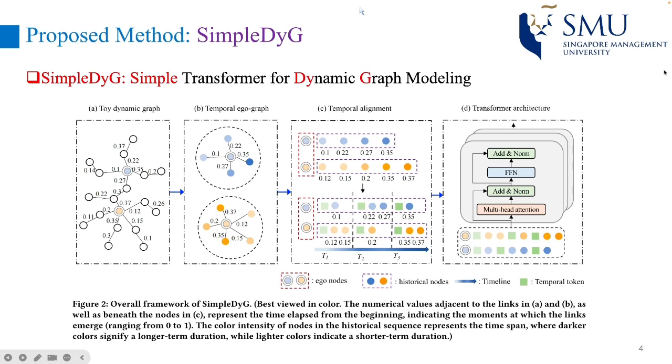These temporal graphs are subsequently transformed into sequences while preserving their chronological order. To incorporate temporal alignment among different ego graphs, we segment the timeline into various time spans with the same temporal interval as in figure C. Then, we add temporal tokens into the ego sequence to identify different time spans. Finally, these sequences are fed into a transformer architecture to facilitate various downstream tasks.